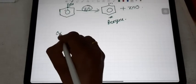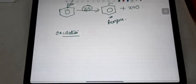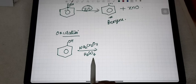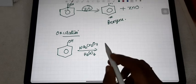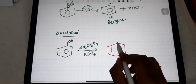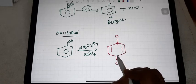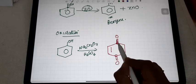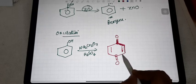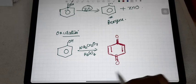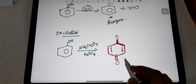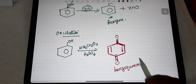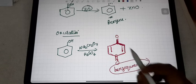The last reaction is the oxidation reaction. Phenol is treated with chromic acid — formed from Na2Cr2O7 and H2SO4. The product is a conjugated diketone, meaning two ketone groups are present with alternating single and double bonds. This product is called benzoquinone. Phenol undergoes this oxidation very slowly, and the benzoquinone formed is a dark-colored mixture containing quinone.